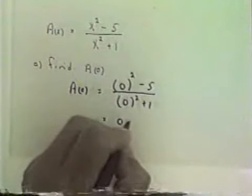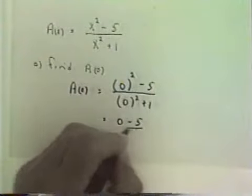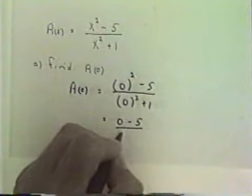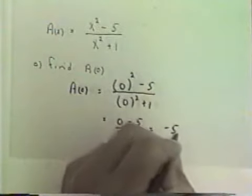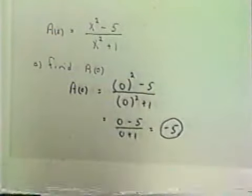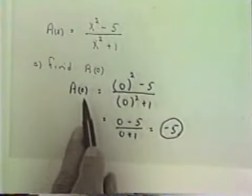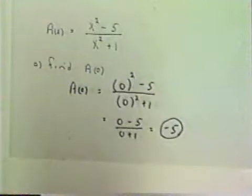Now simply do the work. 0 squared is 0. So I have 0 minus 5 over 0 squared is 0 plus 1, which is negative 5. So we have a evaluated at 0 is negative 5.